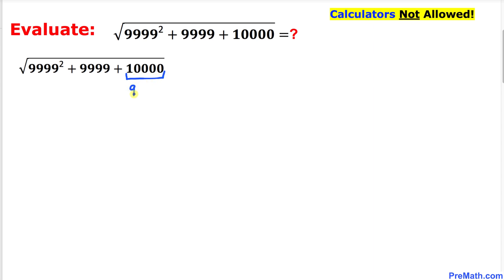10,000 could be written as 9999 plus 1, and here in this next step everything is the same except I have replaced this 10,000 by 9999 plus 1.